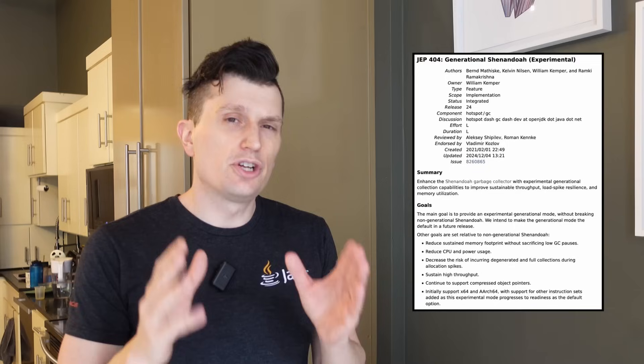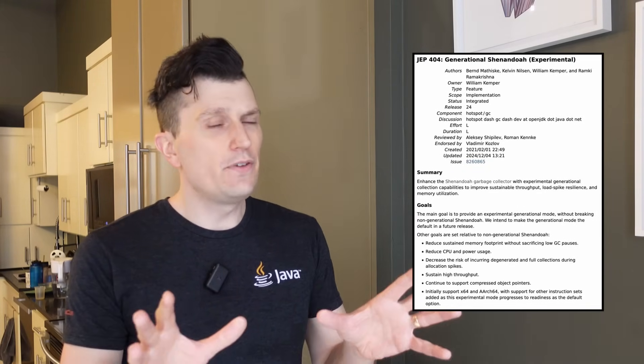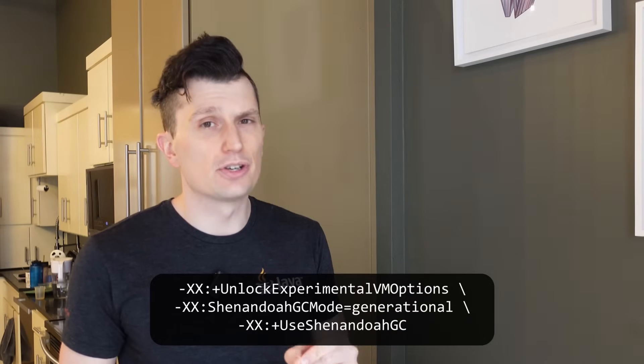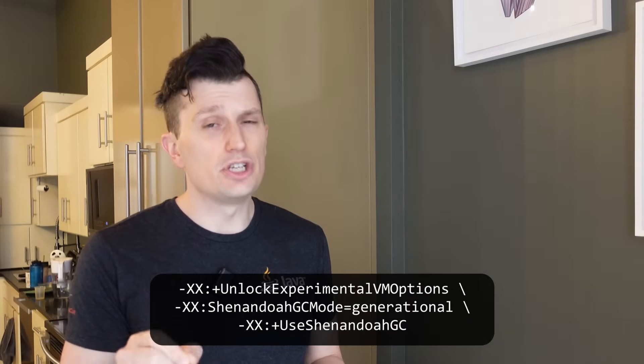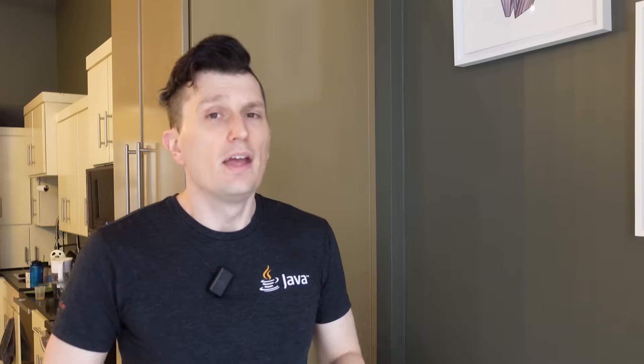In JDK 24, there are two noteworthy garbage collection changes. In JEP 404, generational Shenandoah is being added as an experimental feature. If your JDK supports Shenandoah, you can enable generational Shenandoah by enabling experimental features and setting Shenandoah's GC mode to generational. If you'd like to learn more, check JEP 404 as well as Shenandoah's wiki.